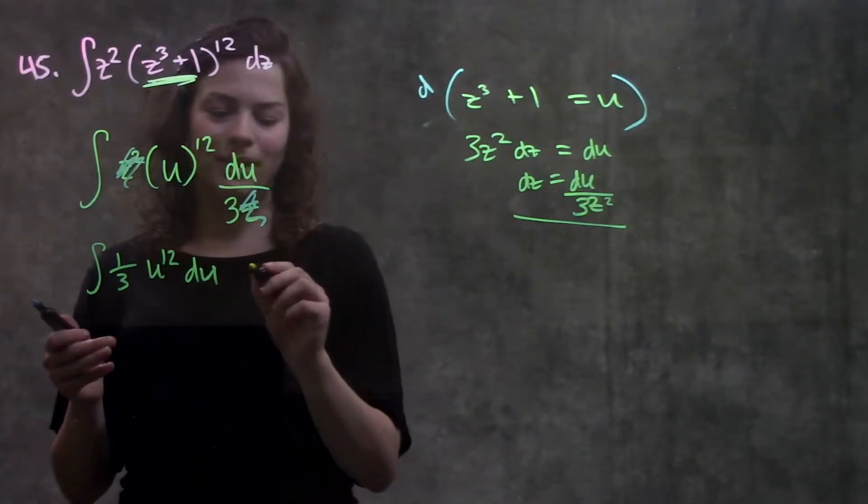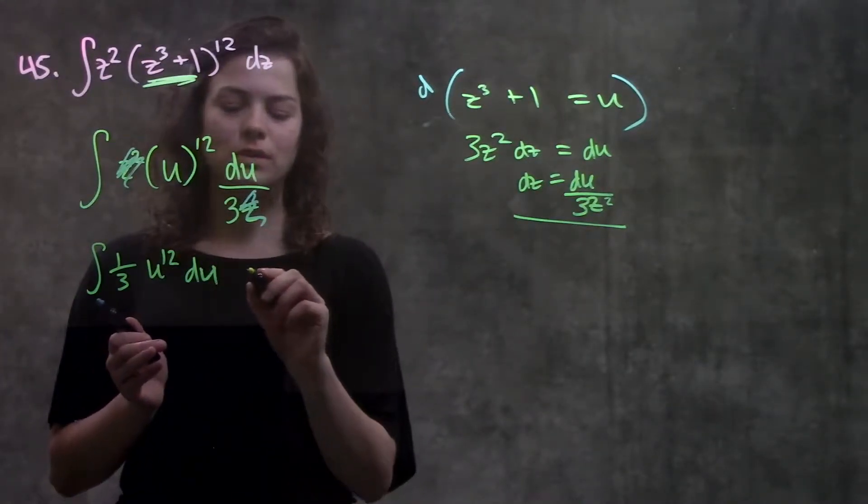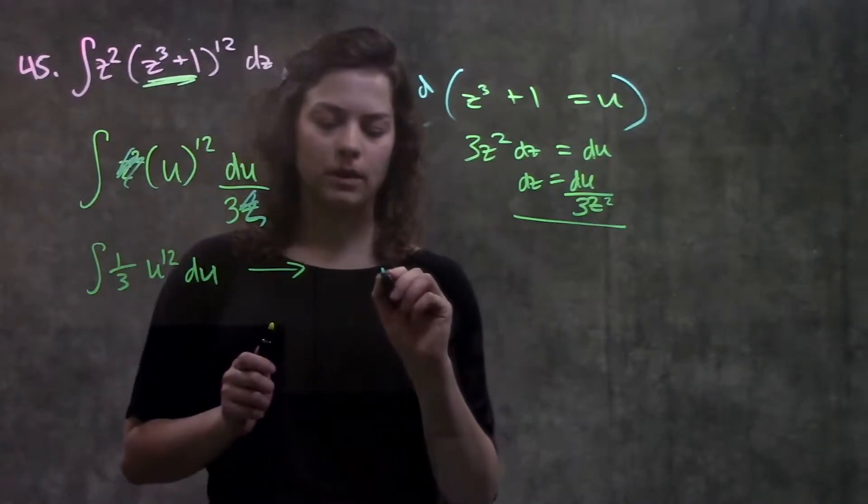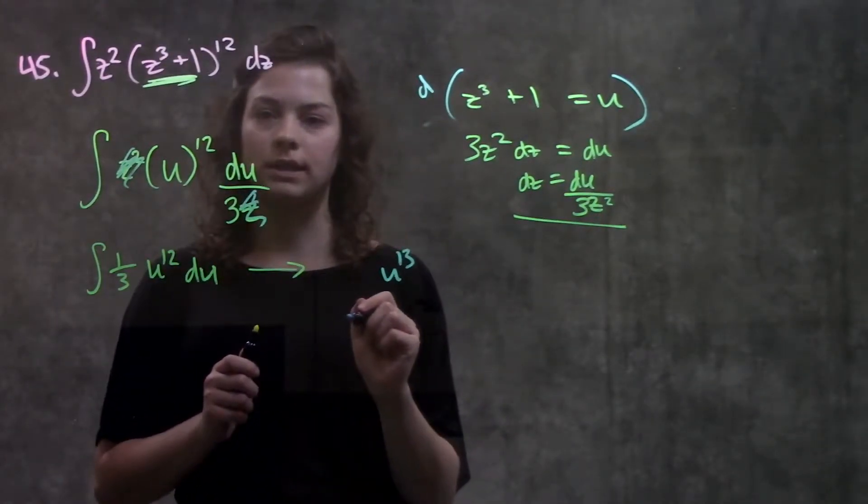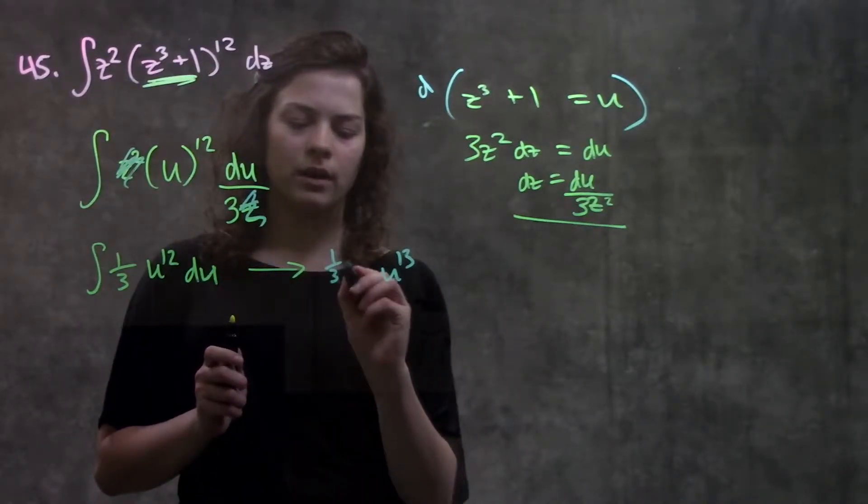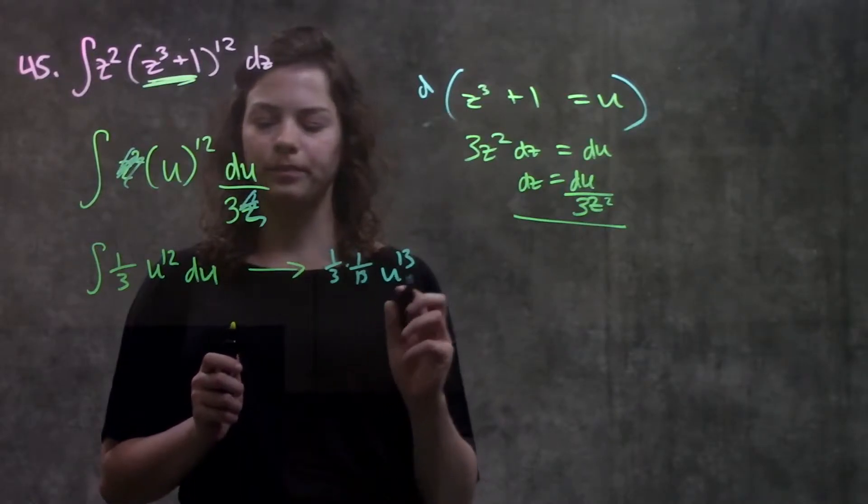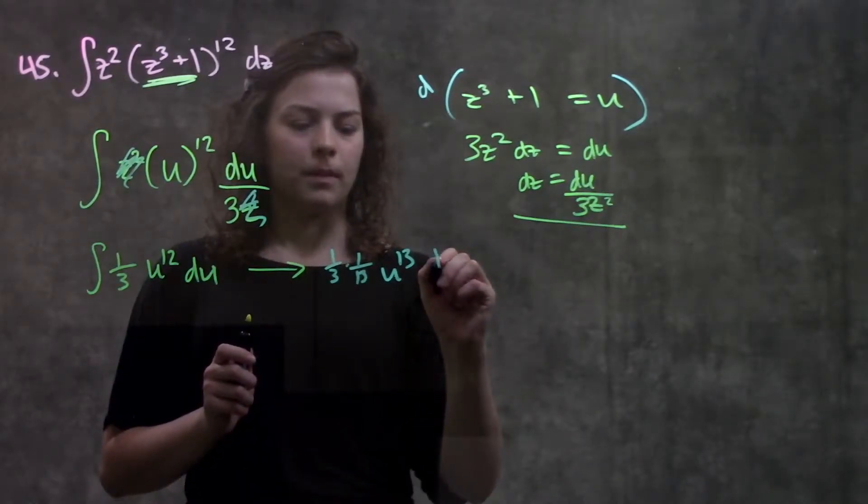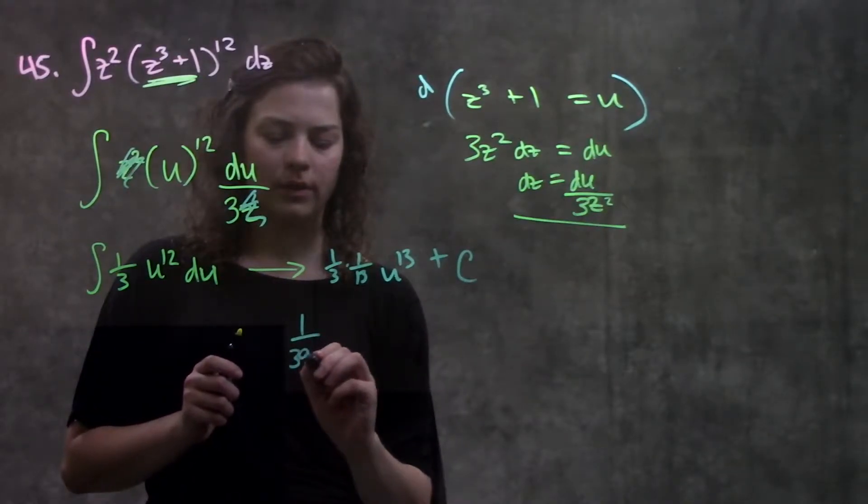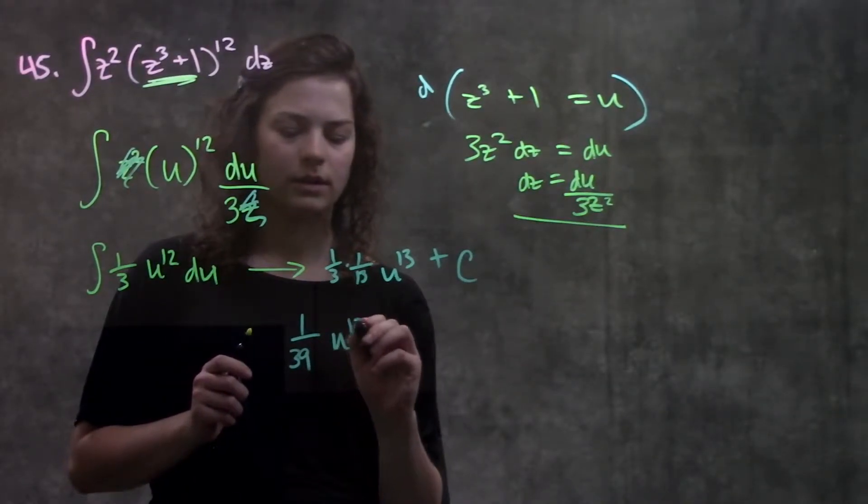So that's about it. From here, just regular integral rules. The integral of u to the 12th, I'll add 1 to the exponent, so it becomes u to the 13th. And then divide by that number. So I get 1 third times 1 over 13 plus c. I'm going to simplify this a little. So I get 1 over 39, u to the 13th plus c.